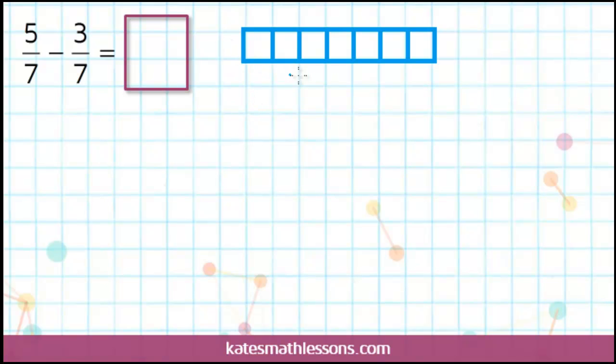So this outside box represents a whole. It's been split into 7 equal parts, so each part represents 1 out of 7, 1 7th. To have 5 7ths means that you have 5 out of 7 pieces.